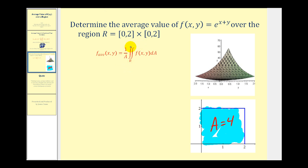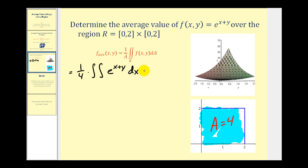So the average value of this function over this region is going to be equal to one-fourth times the double integral of e^(x+y). The order of integration is not going to matter. We'll integrate first with respect to x and then with respect to y, with limits of integration from zero to two for both integrals.